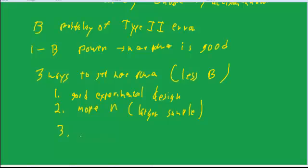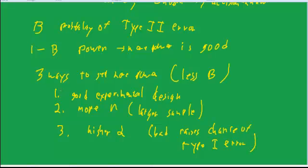And the third is a higher alpha. Now, but a higher alpha is bad, in some sense, because it raises your chance of a type 1 error. So these first two methods are good, the third one is bad.